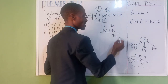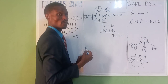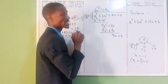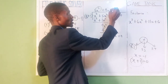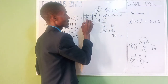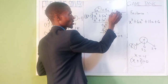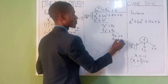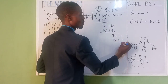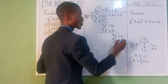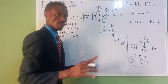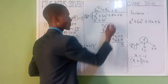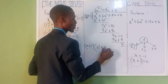Now use x to divide 4x: that gives plus 4. Write your 4 here and multiply the two: 4 times x is 4x, plus 4 times 1 is 4. We use minus again: 4x minus 4x and 4 minus 4 both give zero. So after dividing, we have gotten x squared plus 4x plus 4.